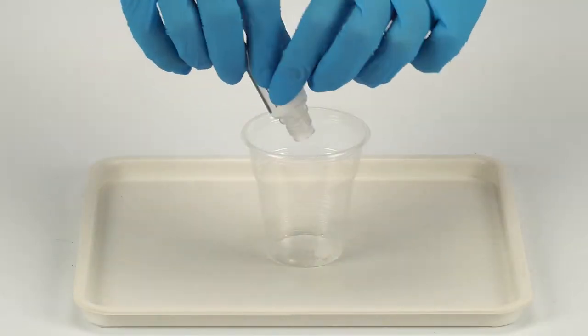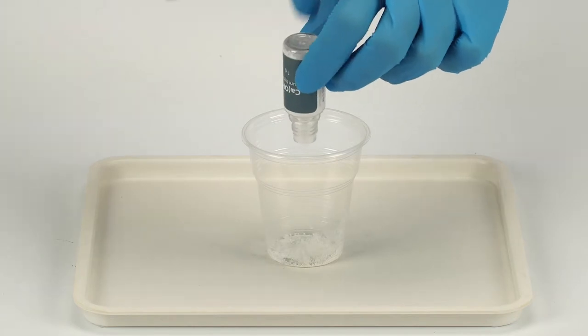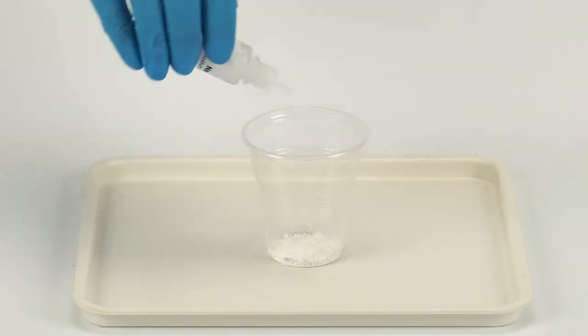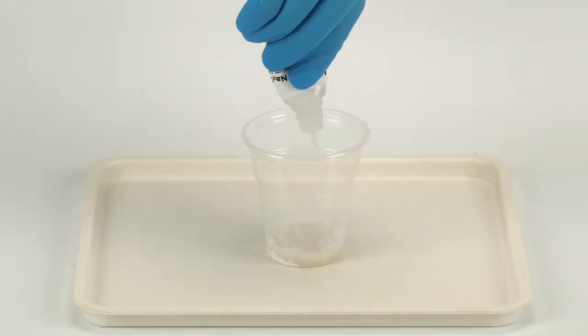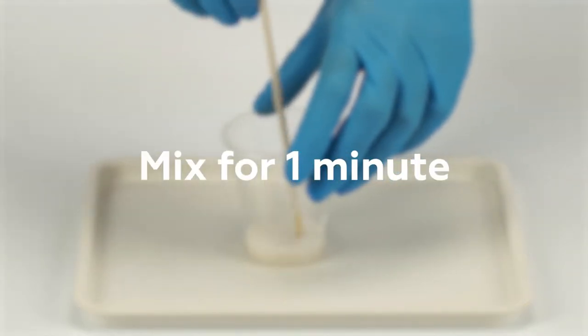First, prepare the alkali solution. Empty the bottle of calcium hydroxide into a plastic cup. Add one bottle of sodium carbonate. Mix the two reagents for one minute using the wooden stick.